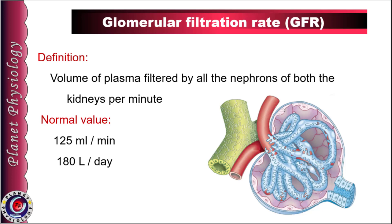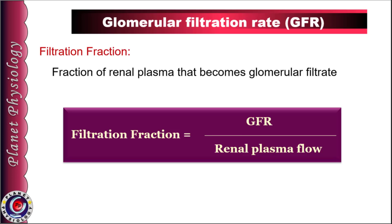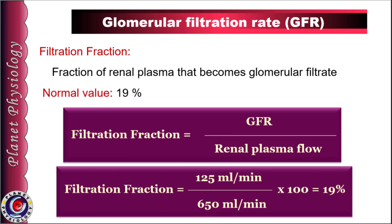This allows rapid and precise regulation of volume and composition of body fluids. The fraction of renal plasma that becomes glomerular filtrate is called the filtration fraction. Normal renal blood flow is 1200 ml per minute, hence renal plasma flow is 650 ml per minute, plasma being 55% of blood. Out of this, 125 ml of plasma gets filtered per minute, and hence filtration fraction becomes 19%.